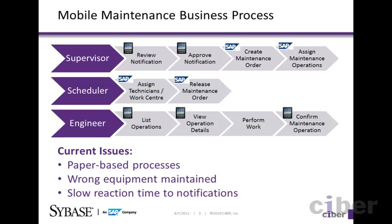The maintenance engineer is responsible for doing the work. They receive a list of operations on the mobile device and complete them — that is, they indicate that the task has been finished and enter in the actual time spent. Below, you can see the business problems listed. As already discussed, the inefficient paper-based process will be solved in the enablement phase, the equipment mix-up will be solved in the innovation phase, and the slow response time to notifications will be solved in the collaboration phase.